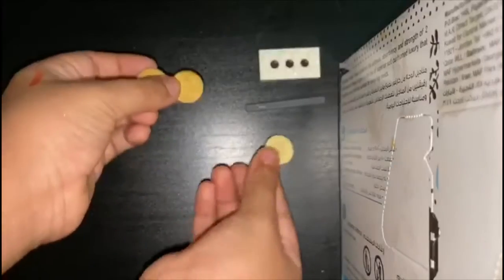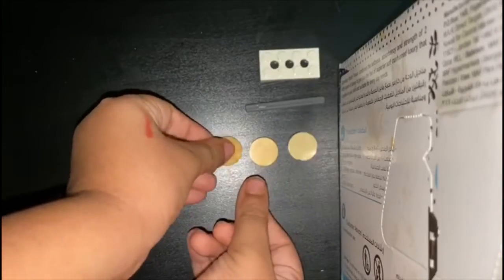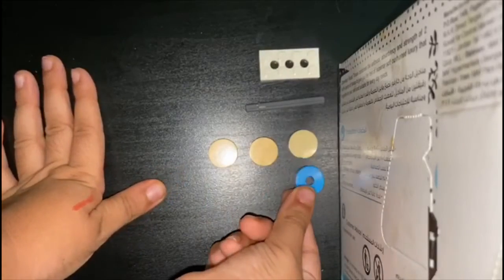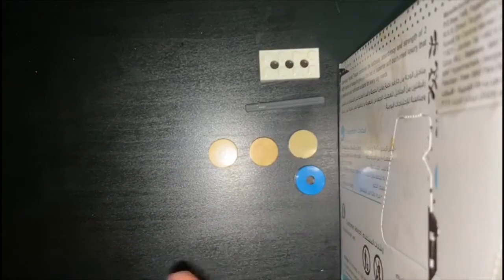You need 3 of these circle flat pieces and one of them is special because it has a hole. You can do any colors you want. I just picked blue because it's my favorite color.